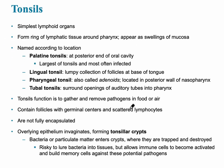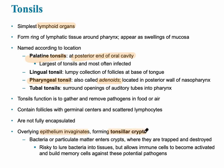The tonsils are a very simple lymphoid organ. The tonsils sometimes removed are the pharyngeal tonsils, also called the adenoids, located in the posterior wall of the nasopharynx. The palatine tonsil is at the posterior end of the oral cavity. There are also lingual tonsils and tubal tonsils. The overlying epithelium folds inward — it invaginates — to form what are called tonsillar crypts.